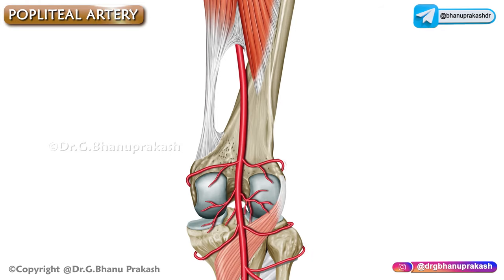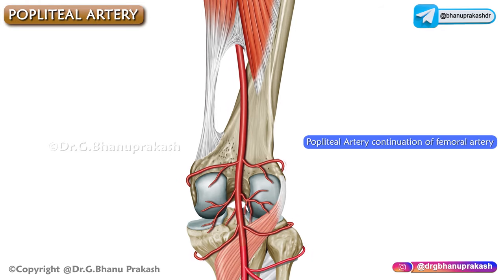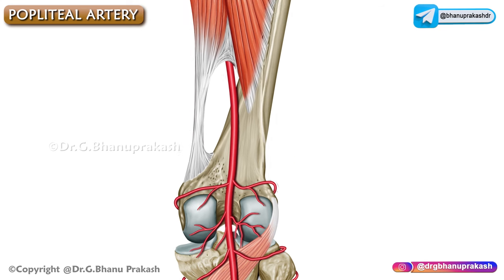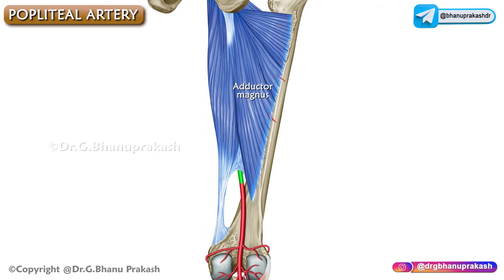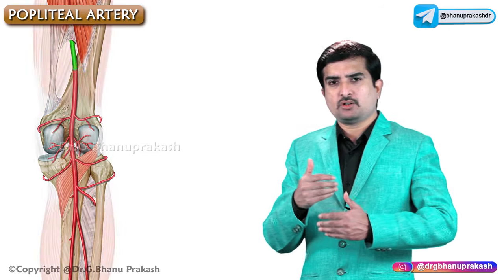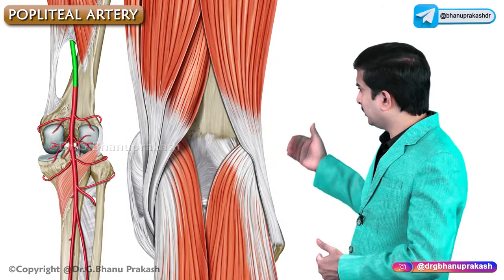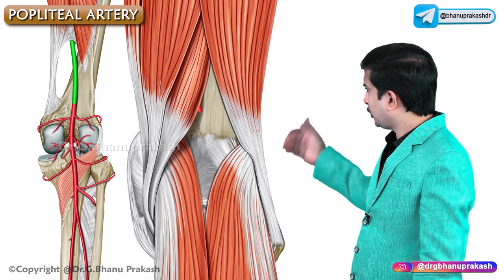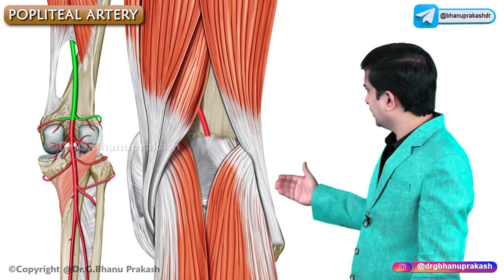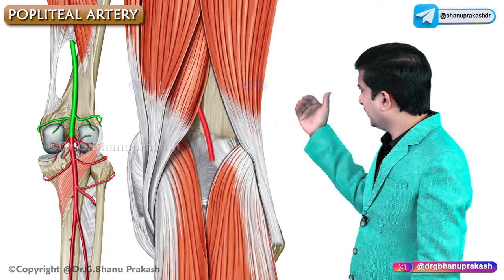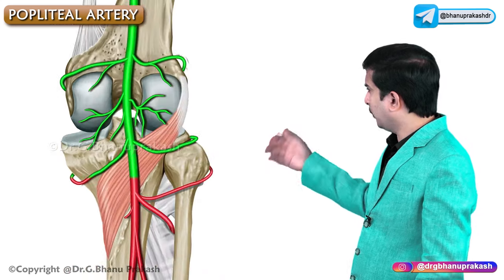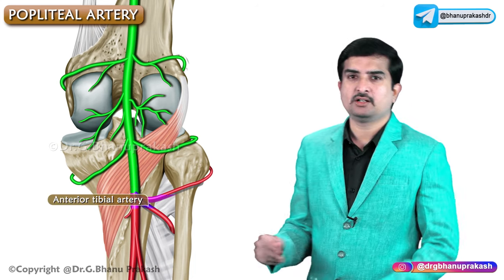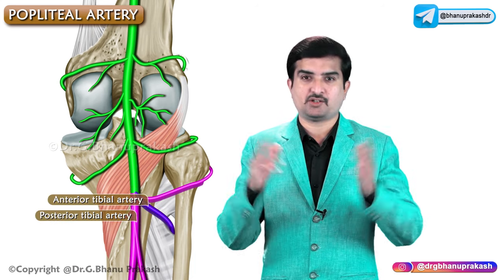The popliteal artery is the continuation of the femoral artery. It begins at the adductor hiatus in the adductor magnus, at the junction of the middle one third and lower one third of the thigh. It crosses the floor of the popliteal fossa from medial to the lateral side to reach the lower border of the popliteus, where it terminates by dividing into anterior as well as posterior tibial arteries.